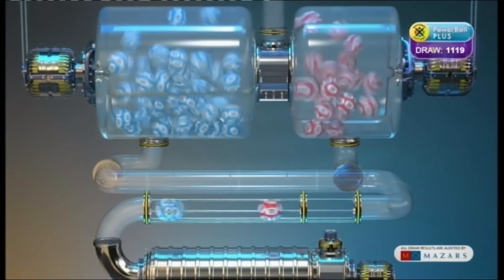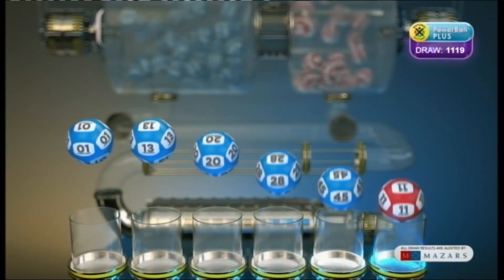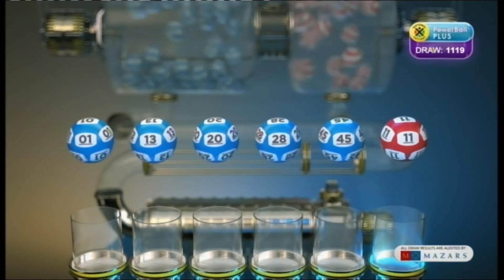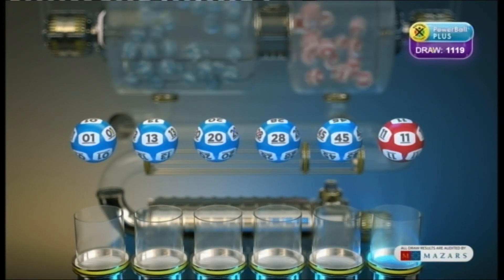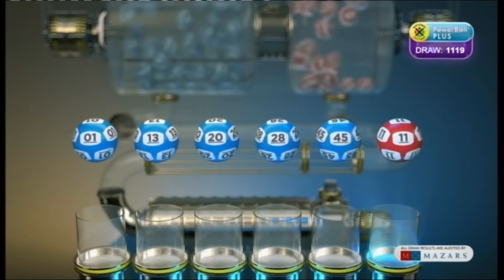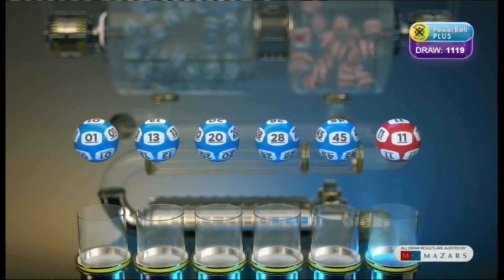Let's recap these numbers in numerical order. 1, 13, 20, 25, 28, 45. And the Powerball is 11.